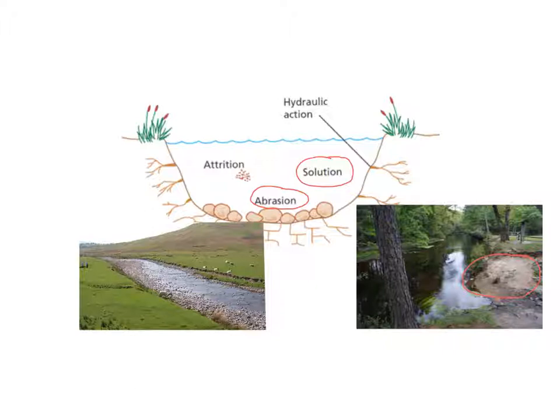You can see in this photograph a river at low flow and the amount of bed load that is there. If you imagine that during very high flow, this bed load is rolled or bounced along the river bed,